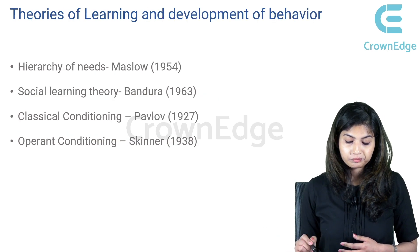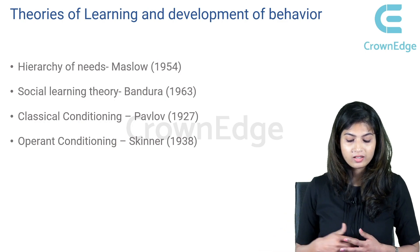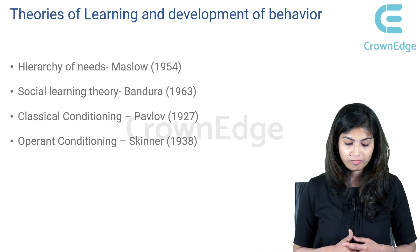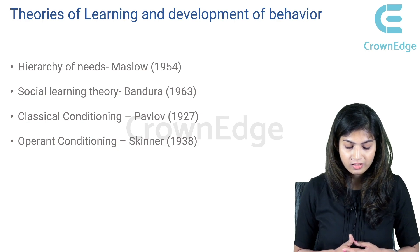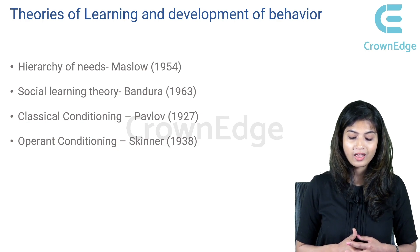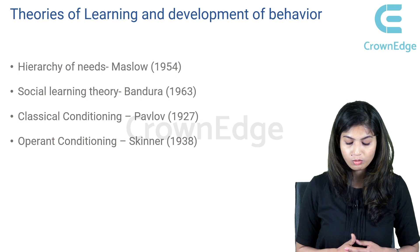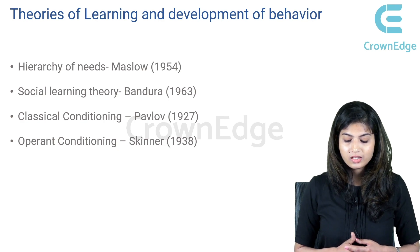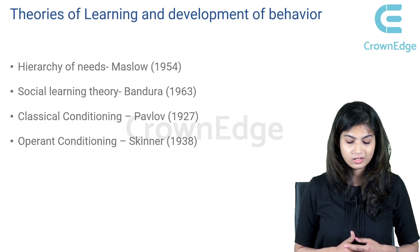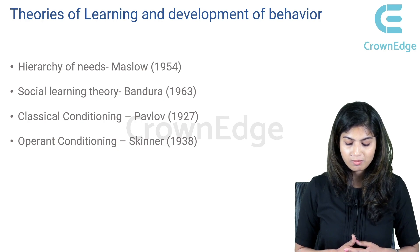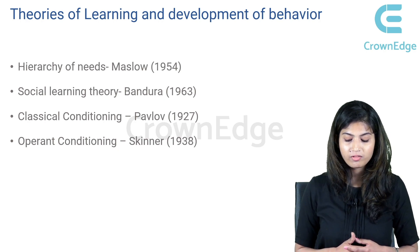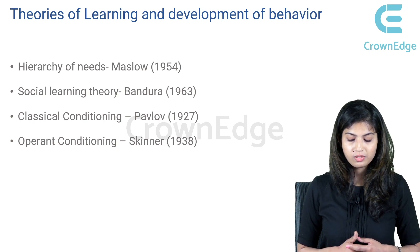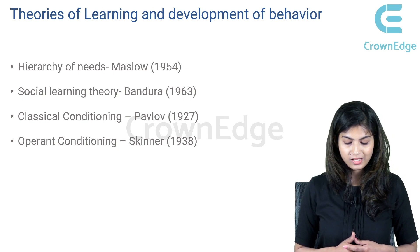The second broad category is the theories of learning and development of behavior. These include: the hierarchy of needs by Maslow in 1954, social learning theory by Bandura in 1963, classical conditioning by Ivan Pavlov in 1927, and operant conditioning theory by Skinner in 1938.